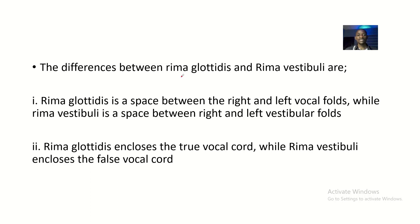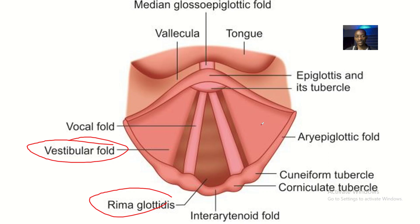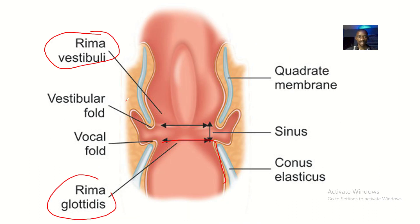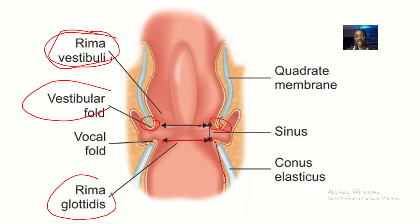The differences between rima glottidis and rima vestibuli: rima glottidis is the space between the right and left vocal cords, while rima vestibuli is the space between the right and left vestibular folds. Using this image, these are the vestibular folds — the right one and the left one — and the space in between them is the rima vestibuli. The space between the vocal folds is the rima glottidis.